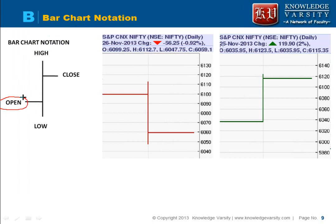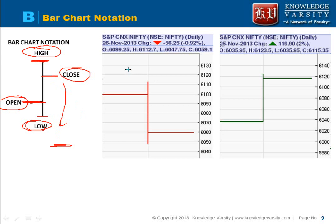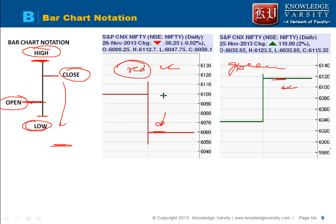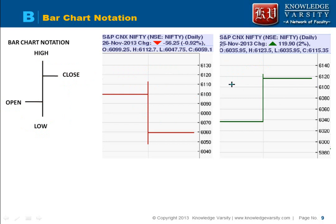In a bar chart notation, the left part represents the open, the peak represents the high, the bottom represents the low, and you also have the close. The close can be below the open or above the open. When it is below the open you use a red line, and when it is above you use a green line — this way you can identify increases and decreases.